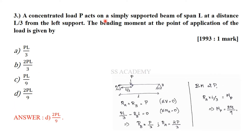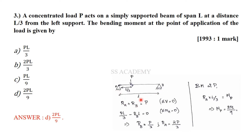A concentrated load P acts on a simply supported beam of span L at a distance L/3 from the left support. The bending moment at the point of load application is asked — a 1993 GATE one-mark question. Using static equilibrium: summation of vertical forces = 0 gives RA + RB = P.